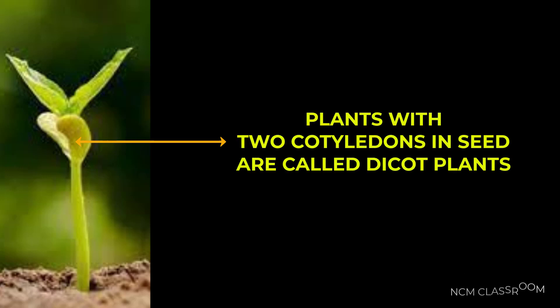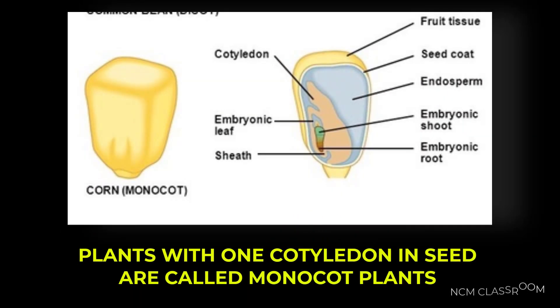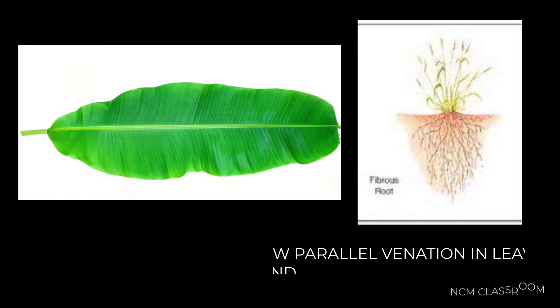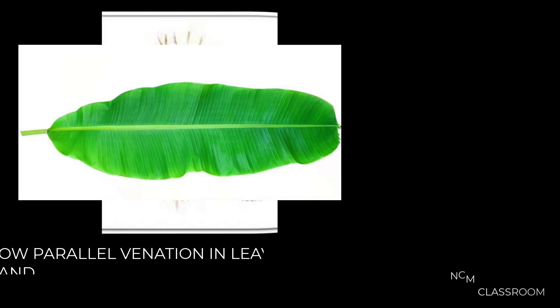Plants with two cotyledons in seed are called dicot plants. These dicots usually show reticulate venation in leaves and tap root system. Plants with one cotyledon in seed are called monocot plants - example: corn. These monocots usually show parallel venation in leaves and fibrous root system.